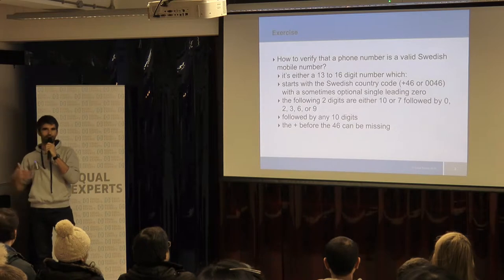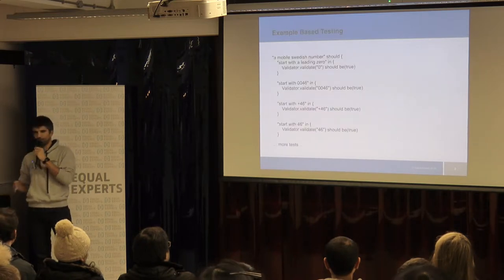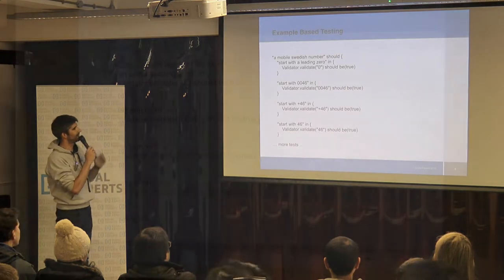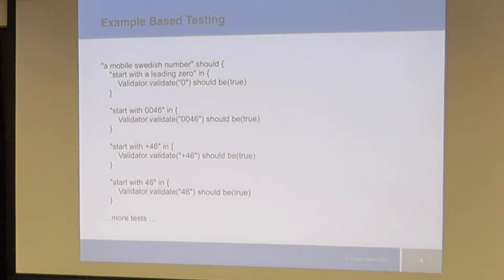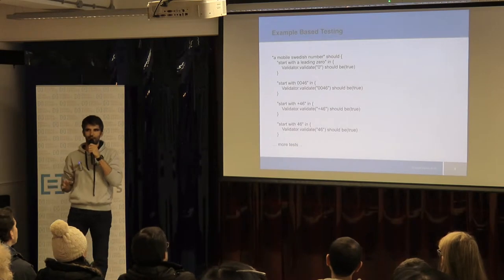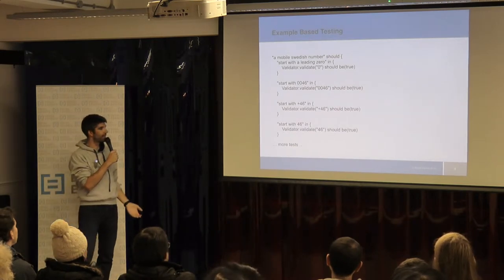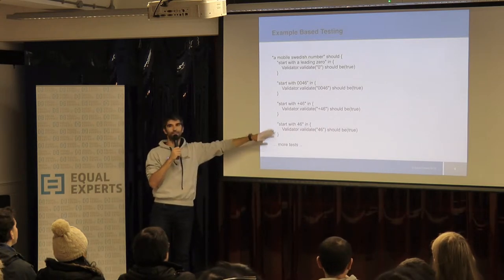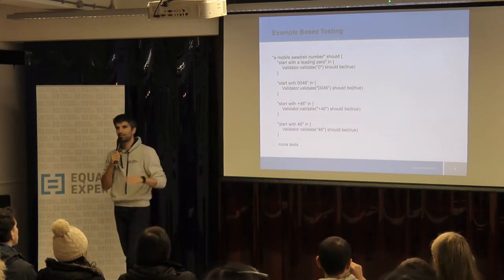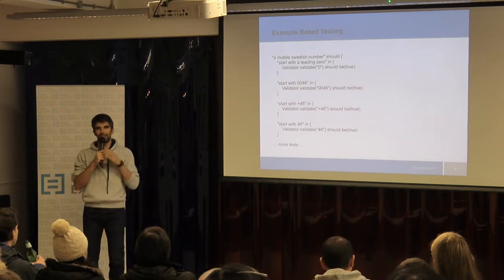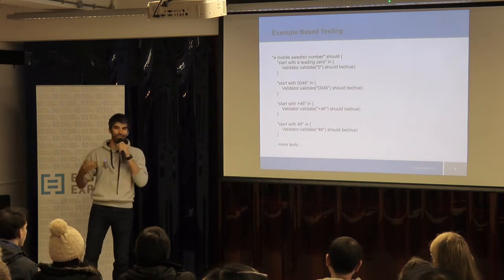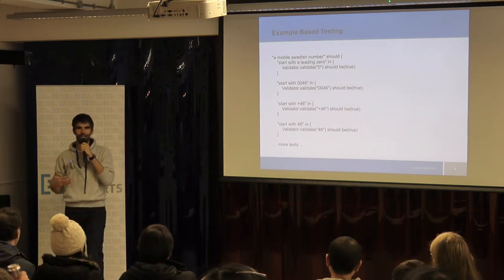If you go and do the traditional way, you would write a little bit of code like this. Forget about the Scala code — let's just think about this in a testing perspective. It has to start with a zero, either a zero, or it has to start with a country code, or it starts with a plus. So we have to write all these tests to make sure we don't miss anything from the requirements. What usually happens is that these tests become very long because there are a lot of permutations, so you're going to spend a lot of time writing code. Also, if something changes, you might have to come back and change a lot of tests. So this is really costly to maintain.